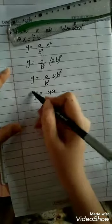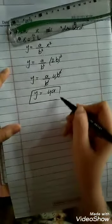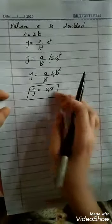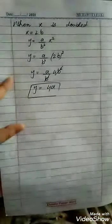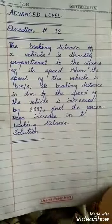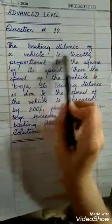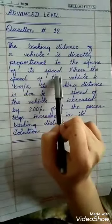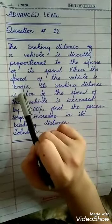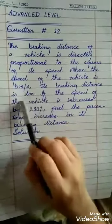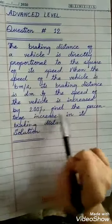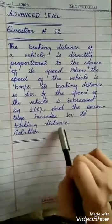So this was required — we had to find the value of Y in terms of A, and we found Y is equal to 4A. This is our 11th question. Now move towards question number 12. The braking distance of a vehicle is directly proportional to the square of its speed. When the speed of the vehicle is B metres per second, its braking distance is D metres. If the speed of the vehicle is increased by 200%, find the percentage increase in its braking distance.